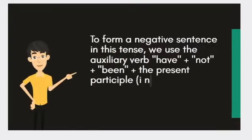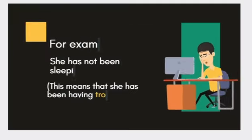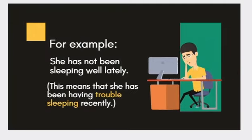To form a negative sentence in this tense, we use the auxiliary verb have plus not, plus been, plus the present participle (ing form) of the main verb. For example: 'She has not been sleeping well lately.' This means that she has been having trouble sleeping recently.